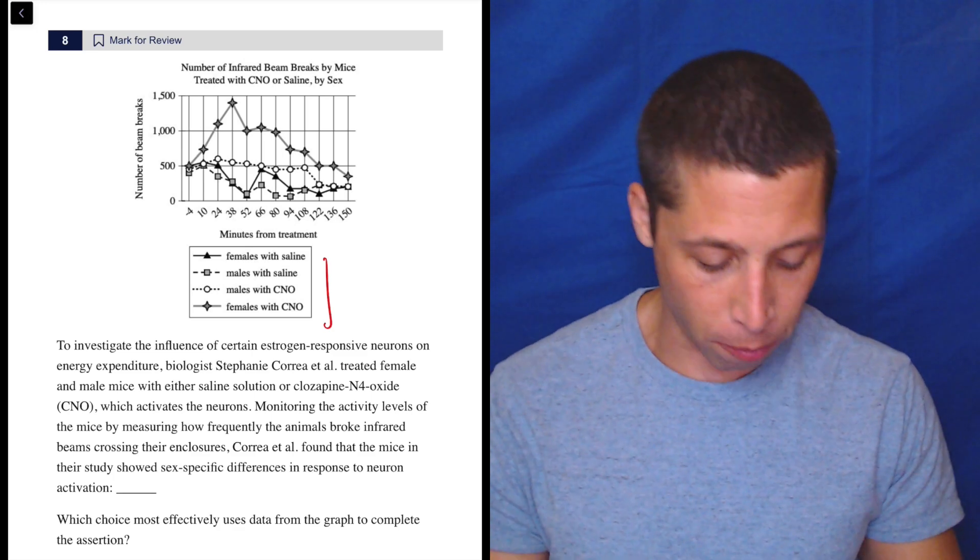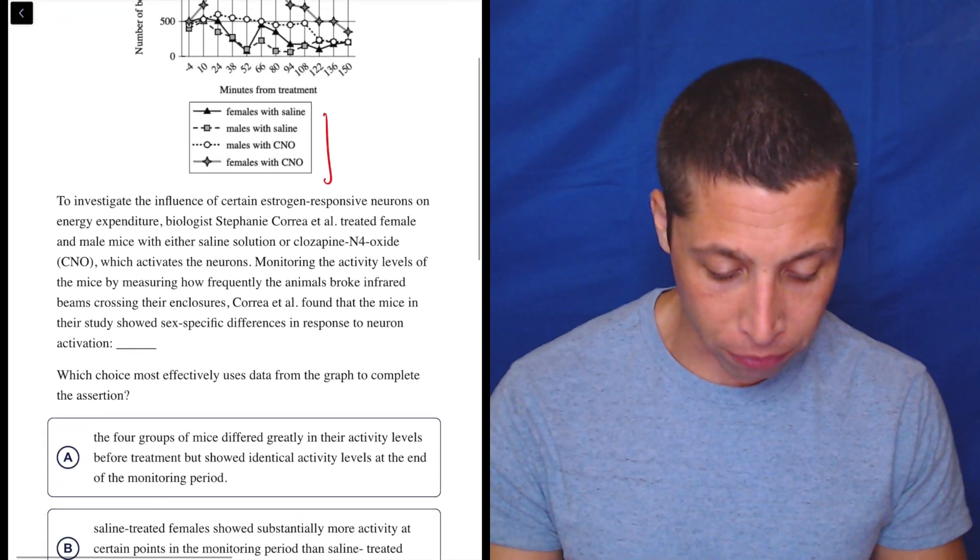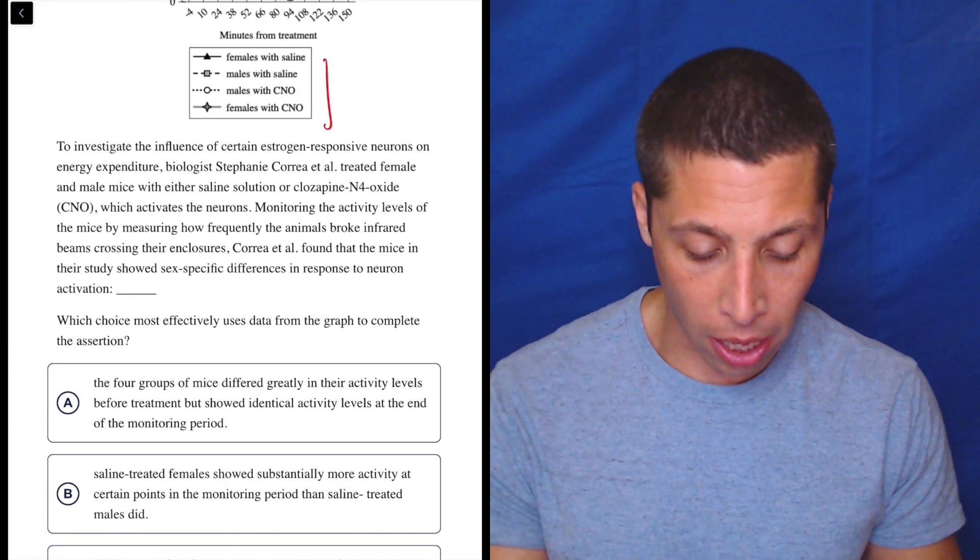Just means that we got to turn off the part of our brain that cares about understanding everything we read. Let's just see what they want from us. So we need to complete the assertion. Let's read the paragraph first before we start diving into this graph.